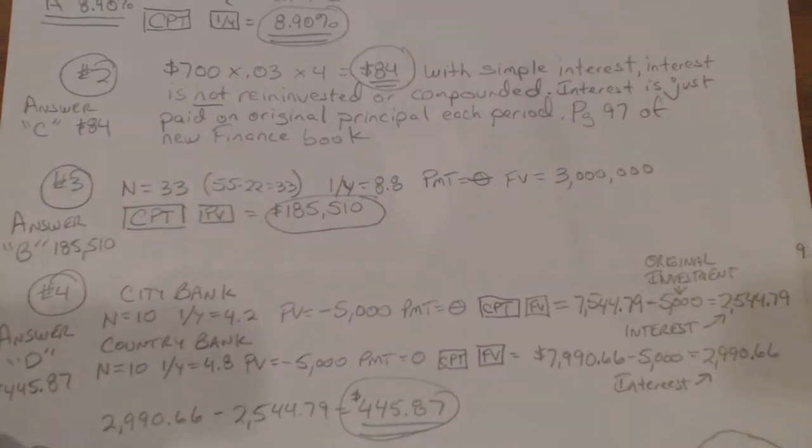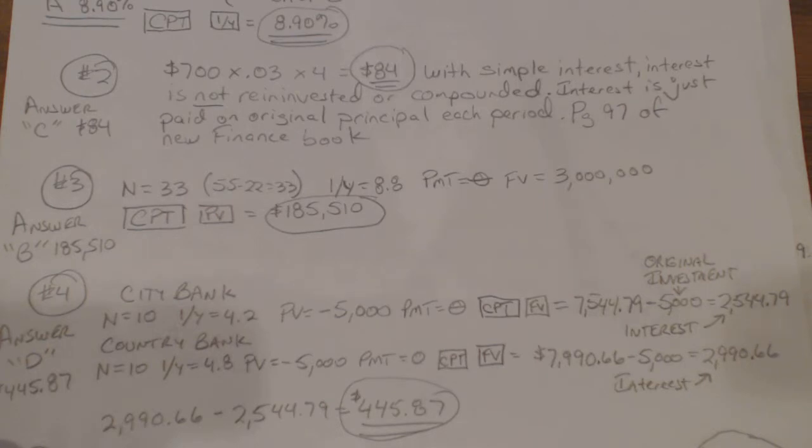Problem number four, what you basically had to do was calculate the different interest that was earned on each account. They were asking for the interest difference, which one got more interest. And it's just compounded annually. It's just pretty straightforward. There were no real notes that I had with this one.